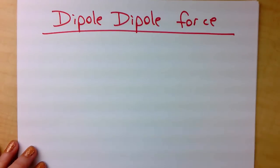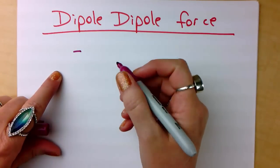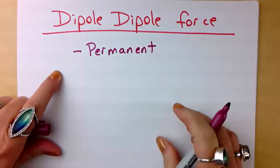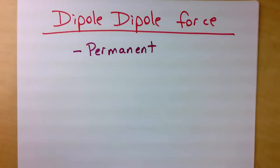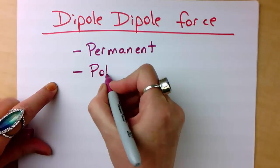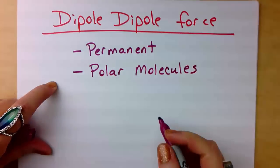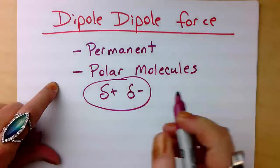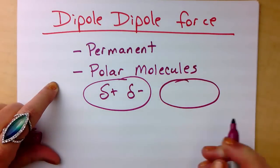There are some key words that go with dipole-dipole forces. In comparison to London forces, a dipole-dipole force is permanent — it's not coming and going temporarily; it is a permanent, all-the-time force. The next keyword is polar molecules. The dipole-dipole force occurs between one polar molecule and a second polar molecule.